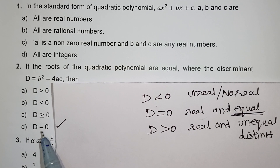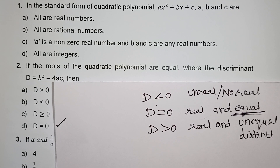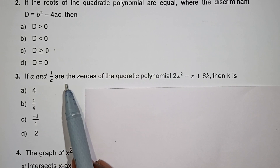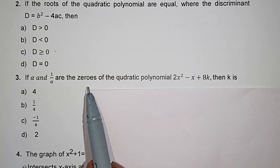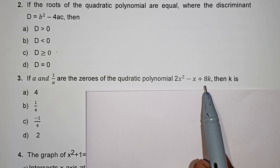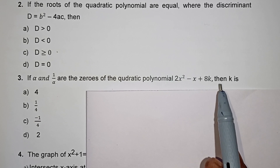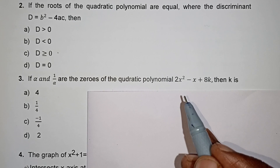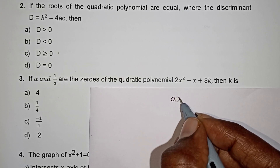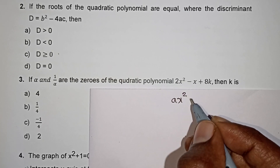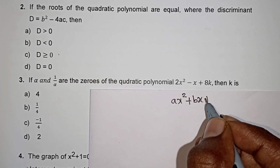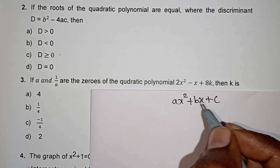Next question: alpha and 1 by alpha are the zeros of the quadratic polynomial 2x² minus x plus 8k. Then k is equal to what? Equate to the general form: ax² plus bx plus c.